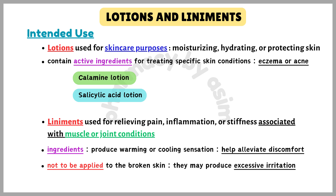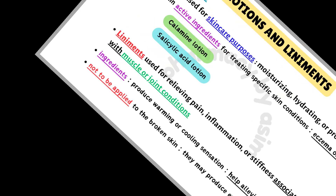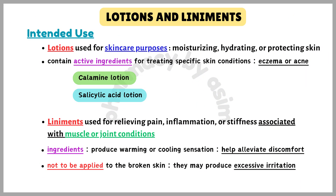Examples of lotions include calamine lotion, salicylic acid lotion, and zinc sulfate lotion. Liniments are primarily used for relieving pain, inflammation, or stiffness associated with muscle or joint conditions such as arthritis, sprains, or strains. They often contain ingredients that produce a warming or cooling sensation to help alleviate discomfort. Liniments are not to be applied to broken skin because they may produce excessive irritation.